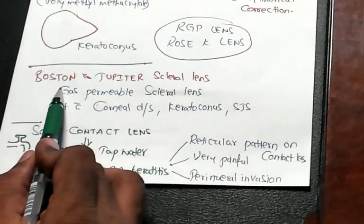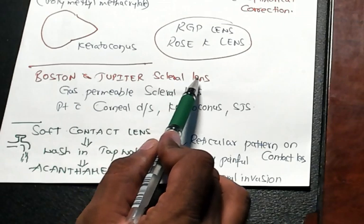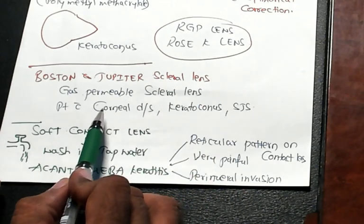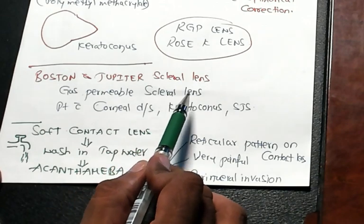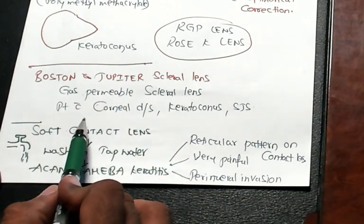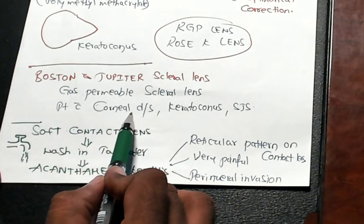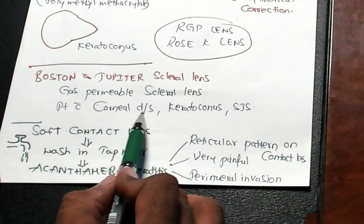Then Boston and Jupiter scleral lens. What is this? Typically they are the gas permeable scleral lens, these are the Boston and Jupiter, especially those patients who have keratopathies, corneal diseases.